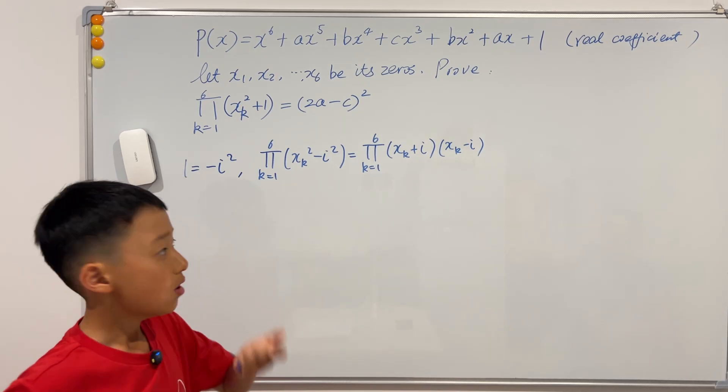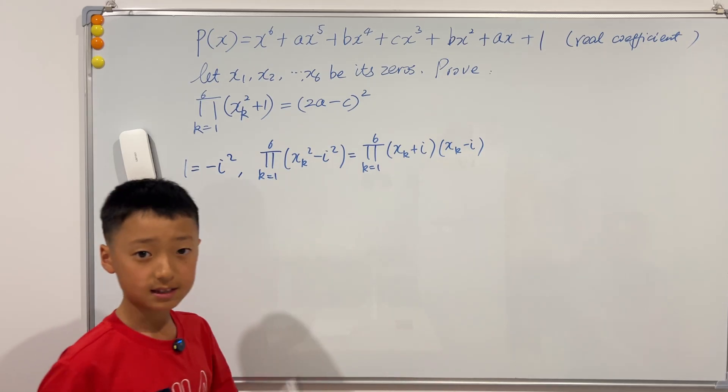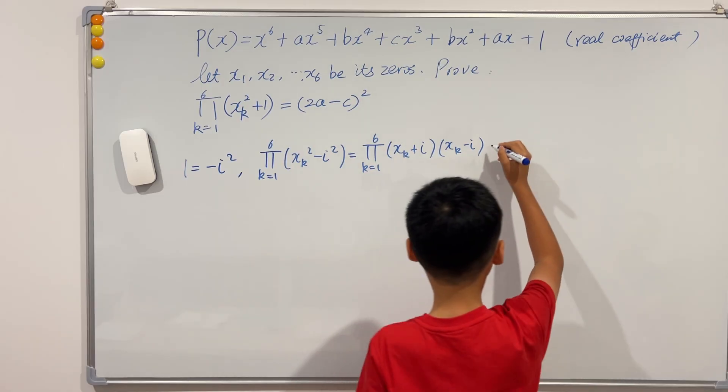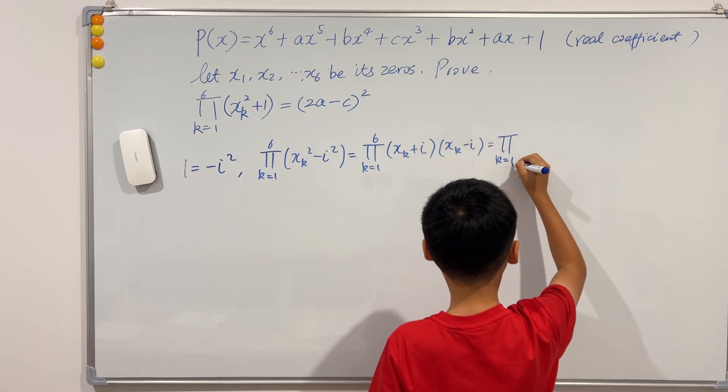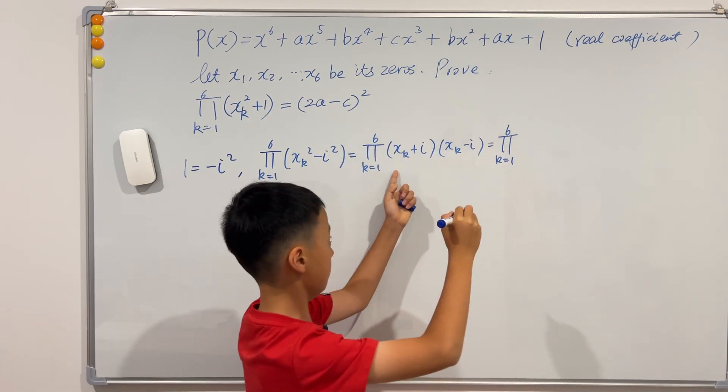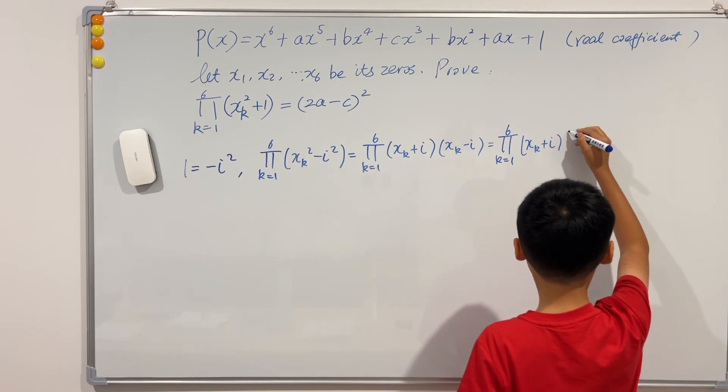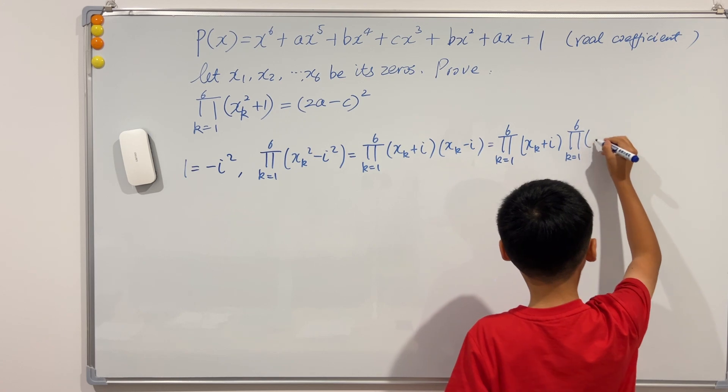Okay, and there's also a capital pi property which says that we can actually separate the capital pi's into two separate ones. So equals capital pi, k goes from one to six, of the first term, and then multiply by capital pi of the second term.